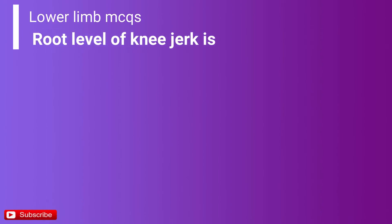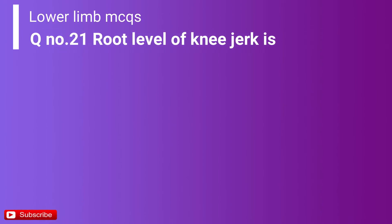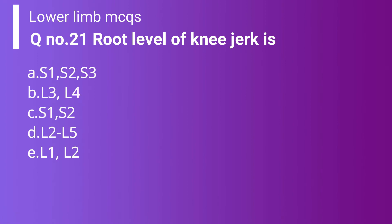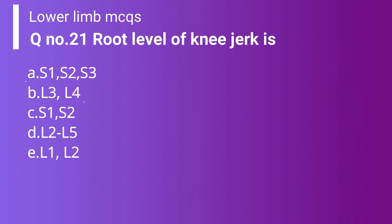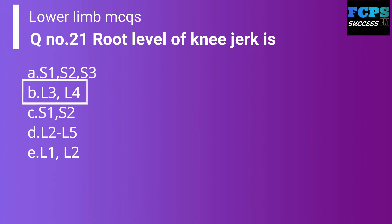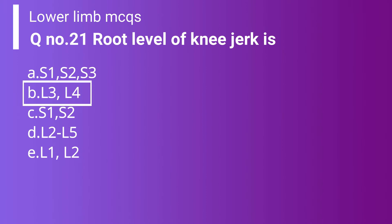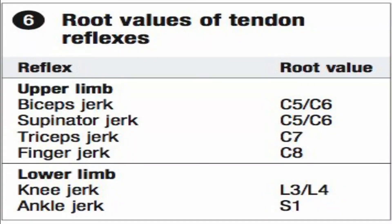Question 21: The root level of the knee jerk is: Option A: S1, S2, S3. Option B: L3, L4. Option C: S1, S2. Option D: L2, S5. Option E: L1 and L2. The correct answer is Option B — L3 and L4. The rest of the options are false. The ankle jerk is associated with S1. The knee jerk is the only reflex mediated by the femoral nerve, supplied by L3 and L4.